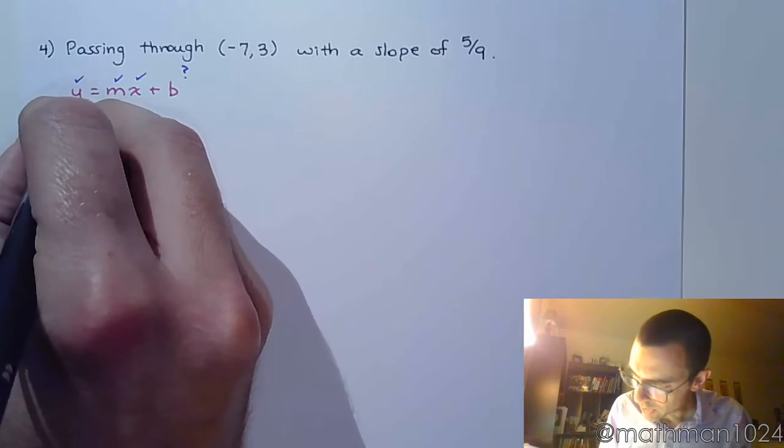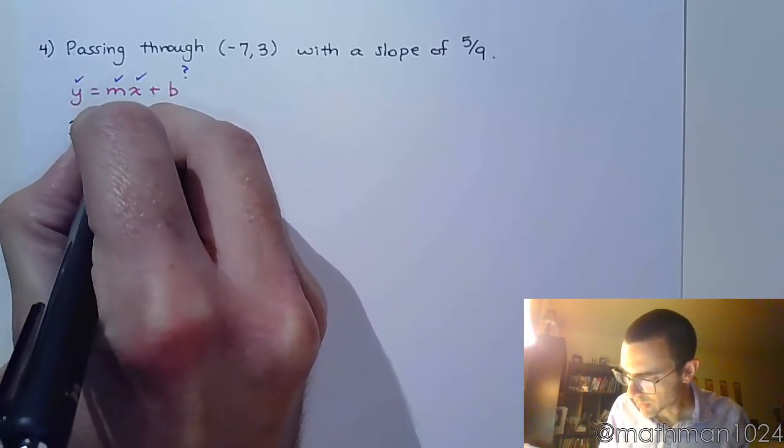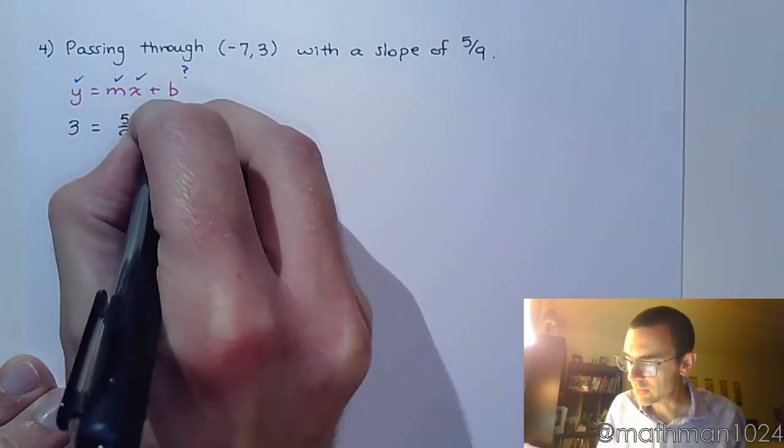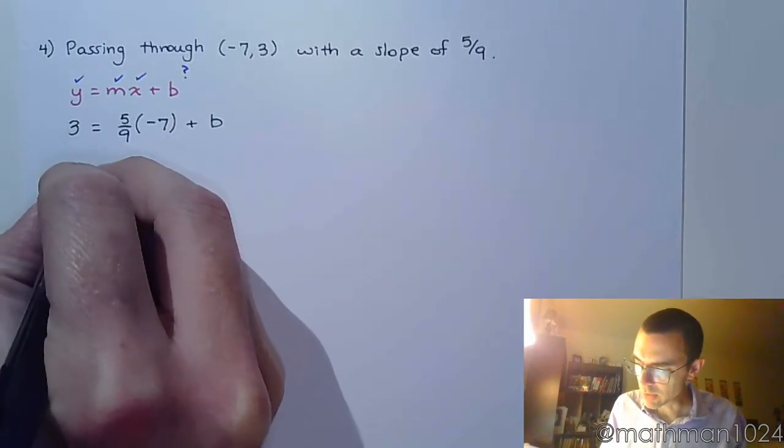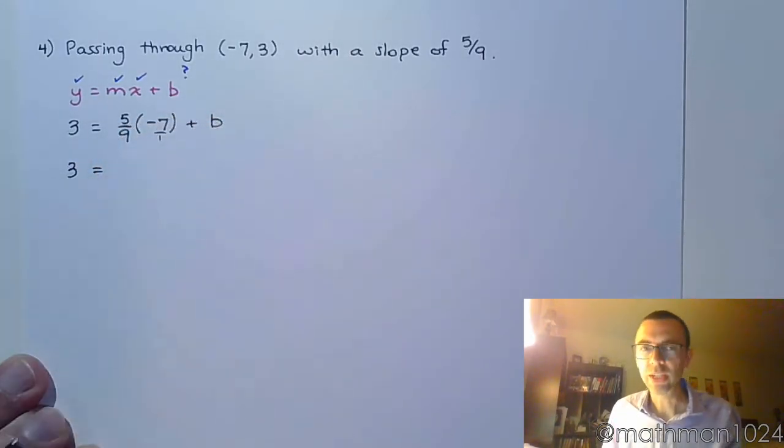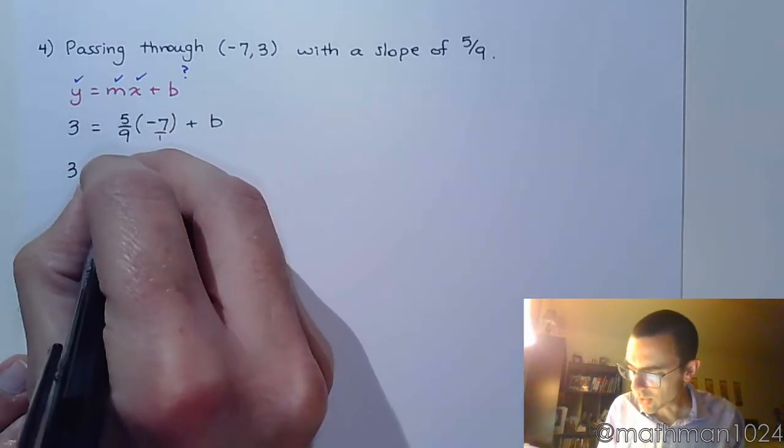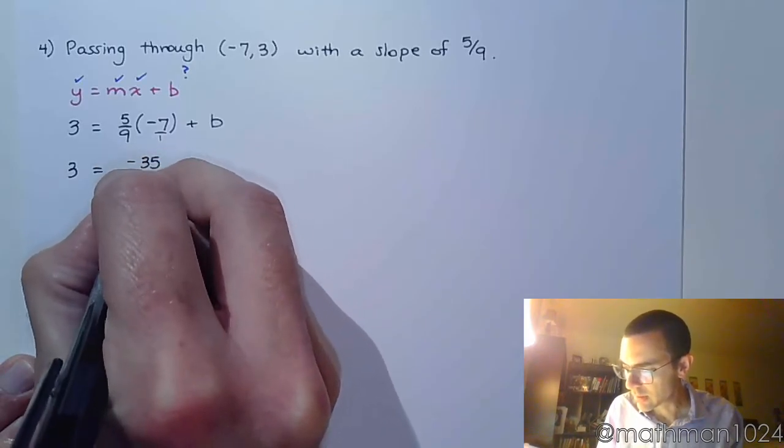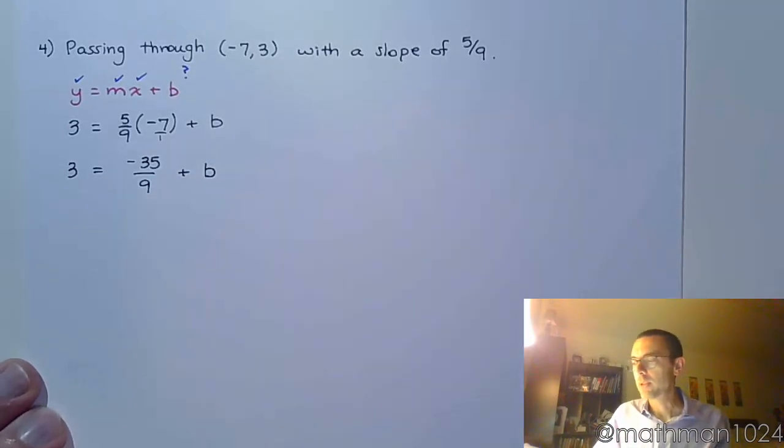My y value is 3. My slope is 5 over 9, you know this is going to be fun, times my x value of negative 7. Alright, so this is 3 over here. Make sure you understand that's negative 7 over 1. When you multiply fractions, you multiply straight across. So we would have negative 35 over 9 plus b.